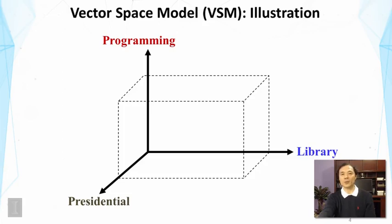So each term here defines one dimension. Now we can consider vectors in this three-dimensional space, and we're going to assume that all our documents and the query will be placed in this vector space. So for example, one document might be represented by this vector d1. Now this means this document probably covers library and presidential, but it doesn't really talk about programming.